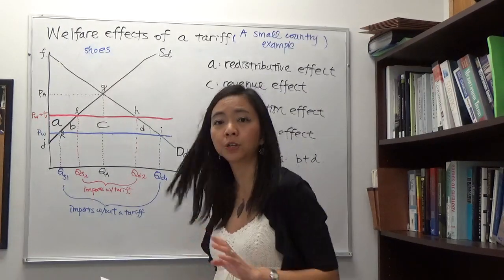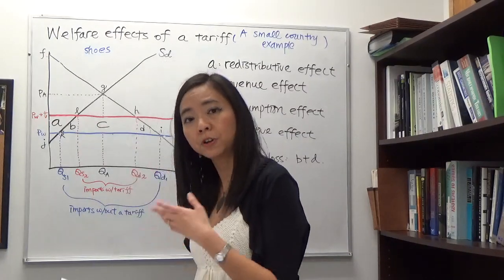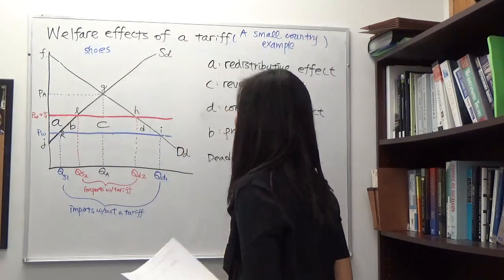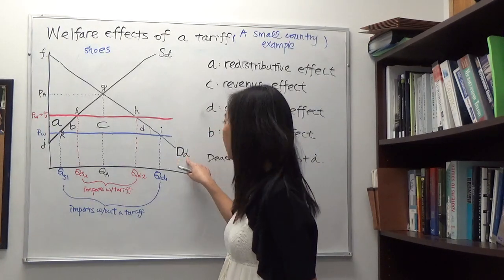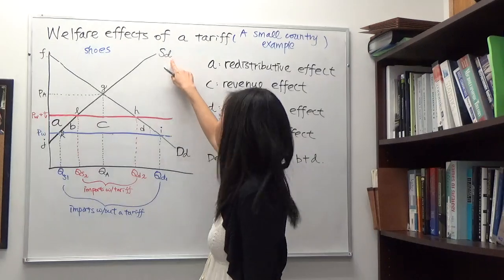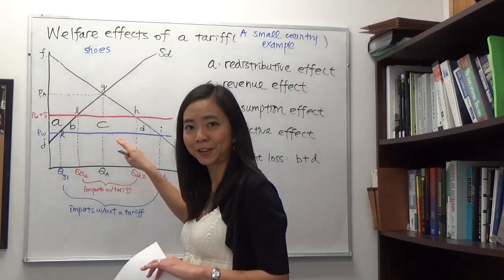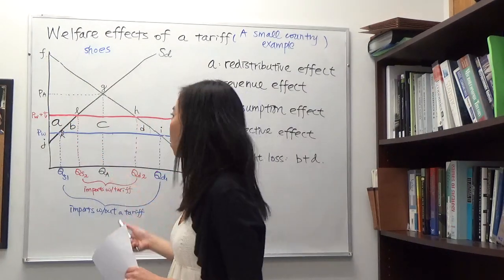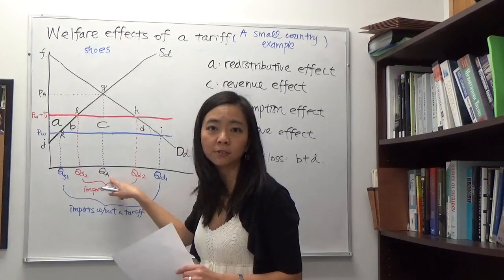We're going to start the story with a country that is under autarky, meaning this country is not trading with any other country. If you're not trading with any other country, then you have to consume whatever you produce. The intersection of the local demand curve (Dd) and local supply curve (Sd) gives us the equilibrium price PA and equilibrium quantity QA, where A stands for autarky.